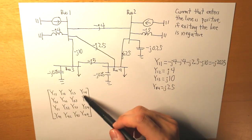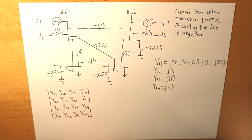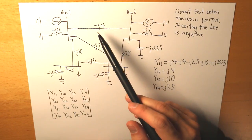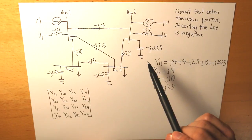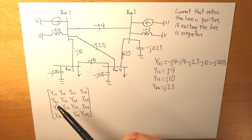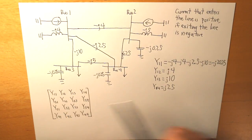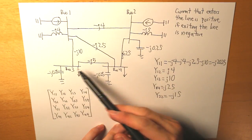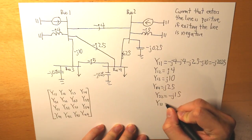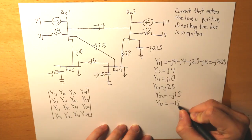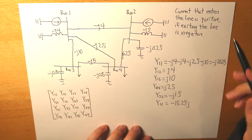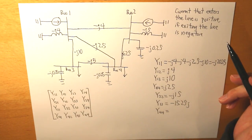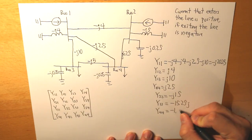For y22, we take all the admittance values connected to bus 2: negative j4, negative j6.25, negative j0.25, and negative j5, giving us y22 equals negative j15. For y33, we get negative j15.25, and for y44, the value is negative j1.5.